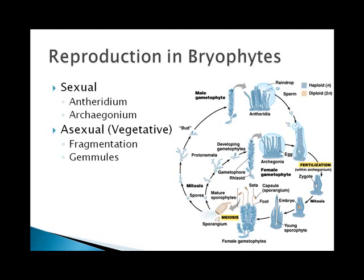Reproduction in bryophytes can happen both sexually and asexually. However, the liverworts, unlike the mosses and the hornworts, can only reproduce asexually, vegetatively. For sexual reproduction, they produce an antheridium and an archegonium. The antheridium produces the sperm, which is the male gametophyte plant. And the archegonium produces eggs, which are the female gametophyte plant. So that means that they actually need a water medium to swim the sperm to the eggs, and that's why you find them in moist environments.